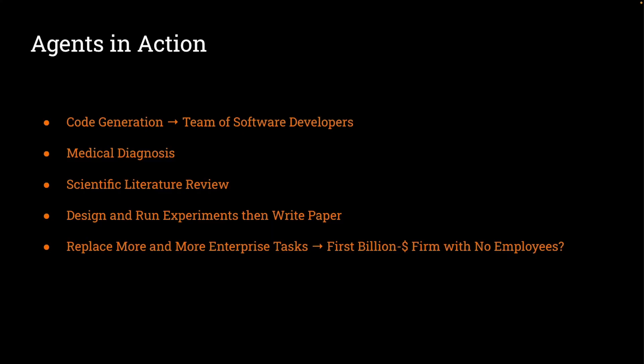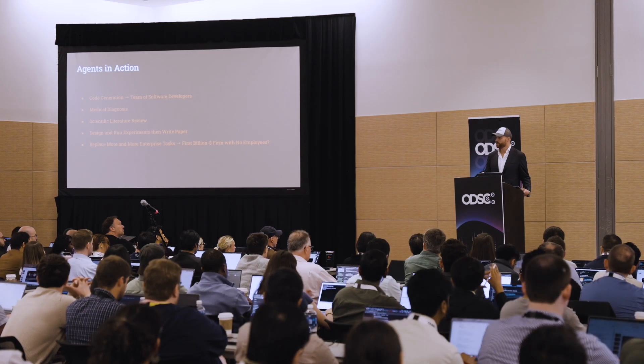And then write up the paper. As you're getting the impression, we can replace more and more tasks, starting with things like customer support. More and more tasks can be handled by agents. It may be possible in our lifetime — maybe in a decade or two — to have a billion-dollar firm with no employees. Seriously, it's possible.